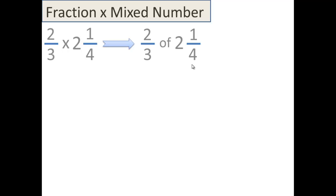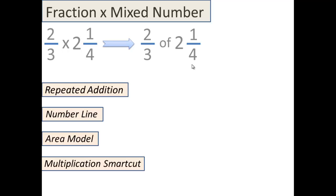In the past, we've talked about four different ways to multiply. Here they are: repeated addition, the number line, area model, or the multiplication shortcut. If you watched videos before, you might already know that two of these—one definitely does not work, and that's repeated addition.